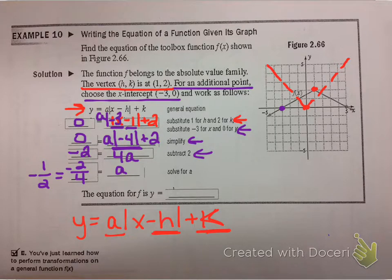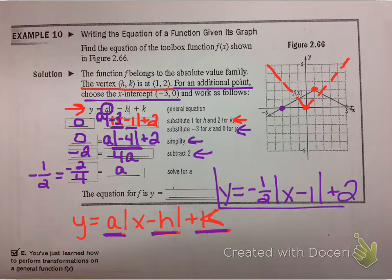And so what that means is that the final equation is we've just solved for a. A was the number out in front of our absolute value, so that's our negative 1 half. And then our h was x minus 1, and this was plus 2. So you've got the equation for that transformed absolute value graph.